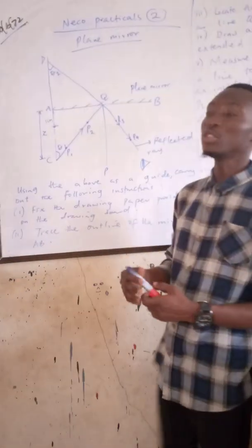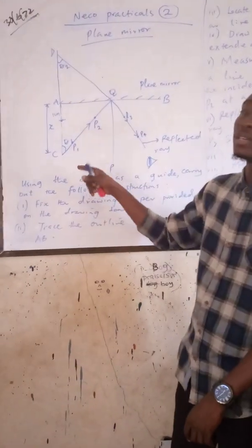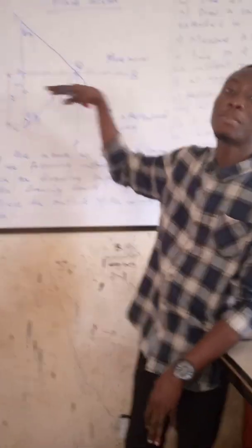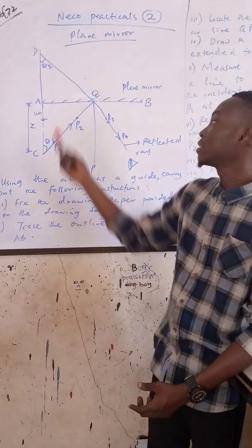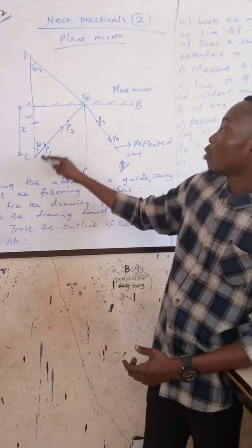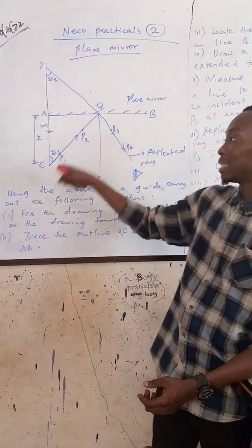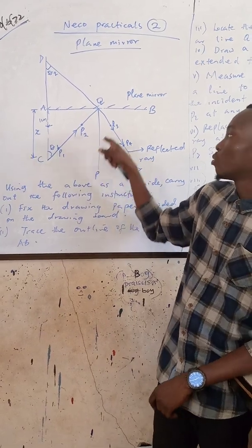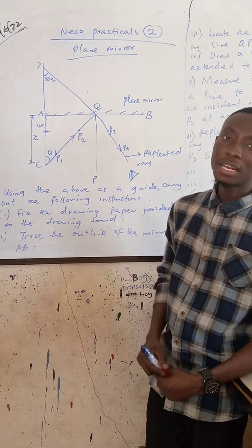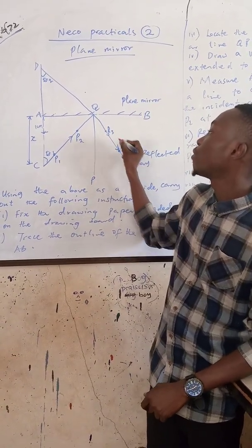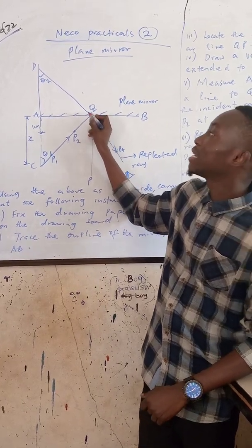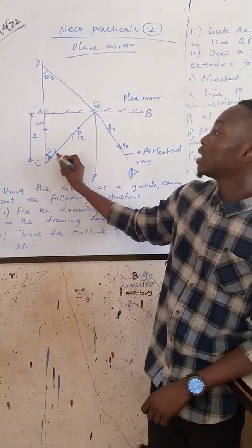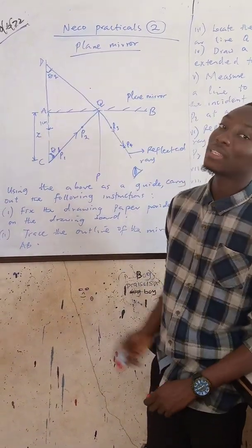After doing the incident ray, we are going to place two pins at any point on the incident ray — point P1 and point P2. After placing P1 and P2, we are going to place the mirror back on the outline AB. When placing it at outline AB, we are going to trace the reflected ray from the mirror. We will watch the mirror and try to block the lines being reflected, blocking them at points P3 and P4. After that, we draw a straight line joining P4 and P3 to meet at Q, and extend the line to meet at D. The angle here is referred to as theta 1 and the angle here as theta 2.